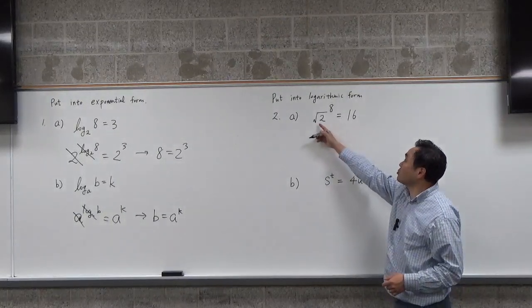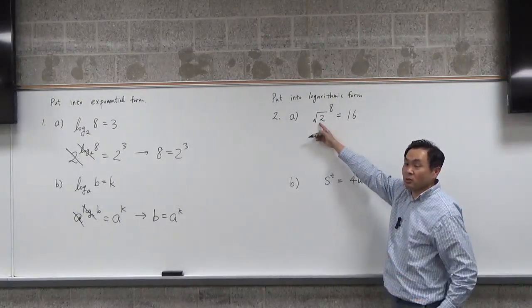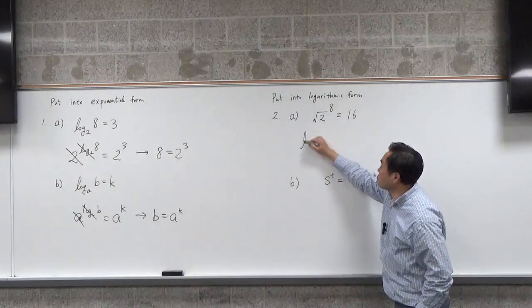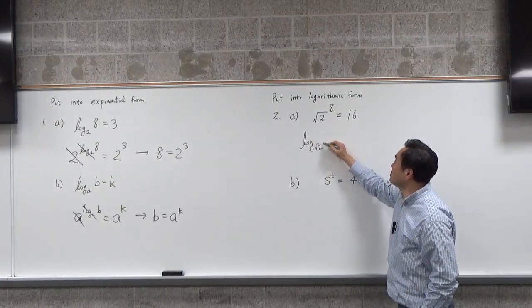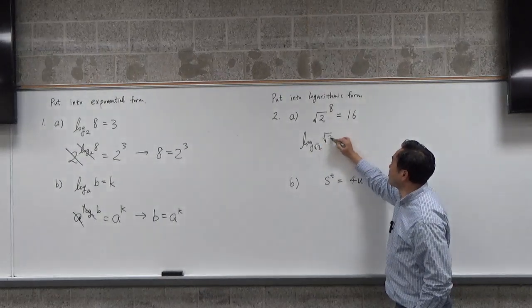To get rid of the square root of 2, you take log base square root of 2 to cancel the base.